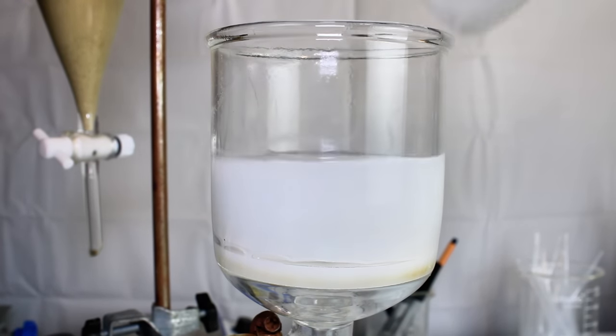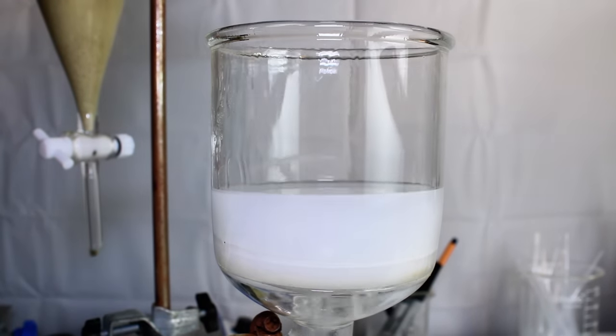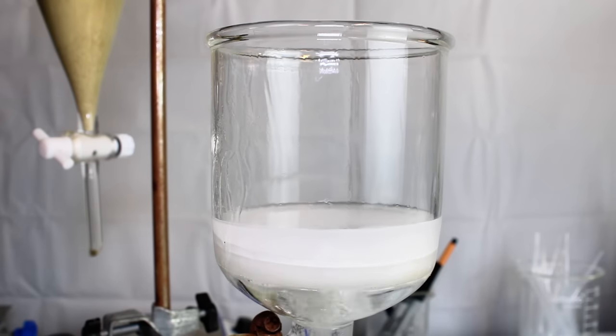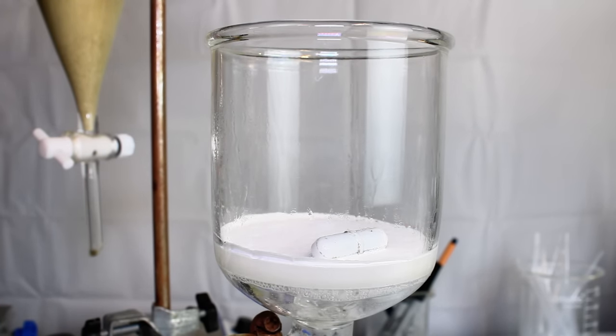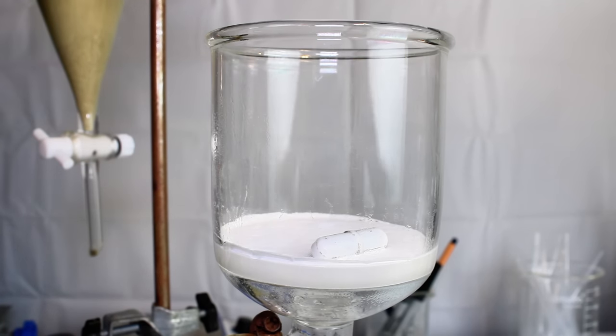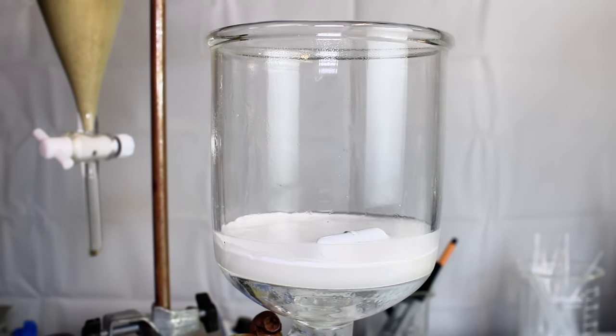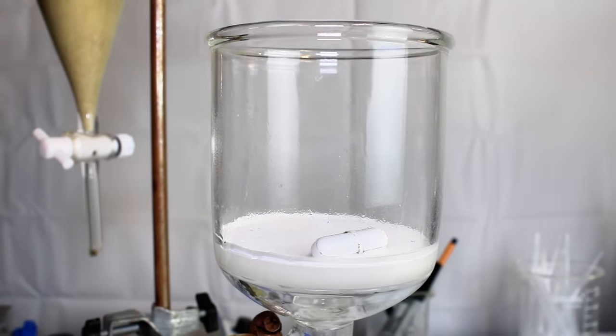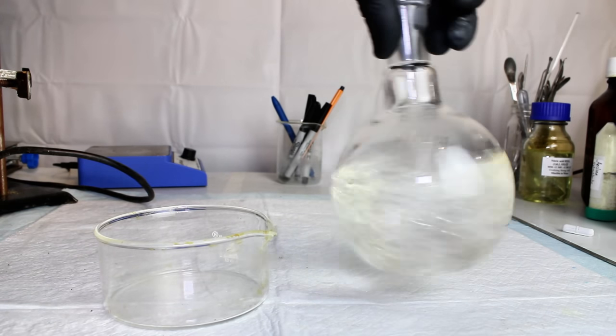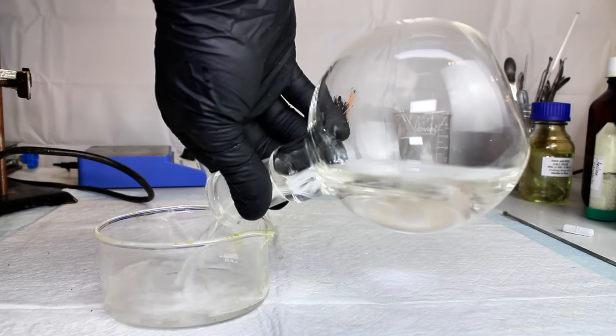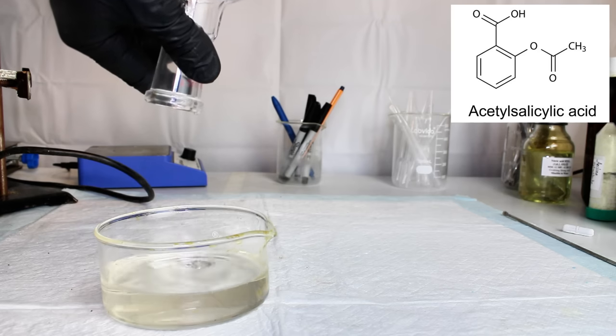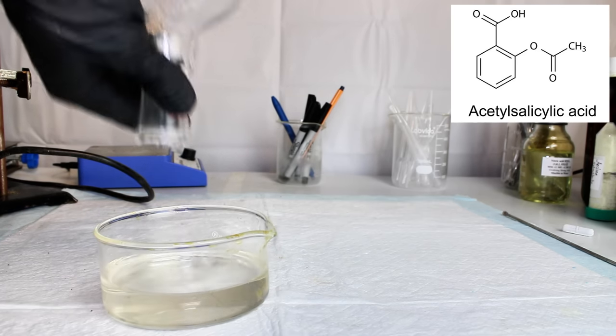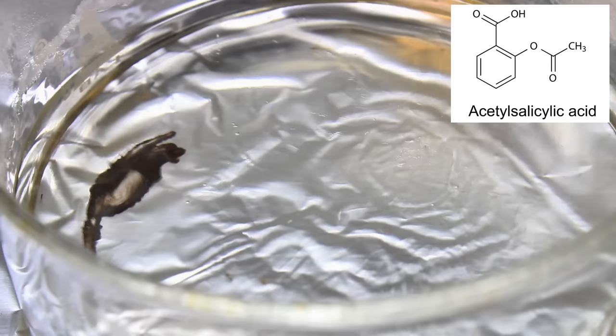To get into the actual synthesis of this chemical from aspirin, the first thing I needed to do was separate the active chemical in aspirin from the pill binder material. This was done by grinding the pills into a powder and then dissolving the powder in warm isopropyl alcohol. This solution was then passed through vacuum filtration to remove the binder material, which I'm pretty certain was cornstarch. The filtrate contained the active chemical acetylsalicylic acid, which was transferred to a crystallization dish.